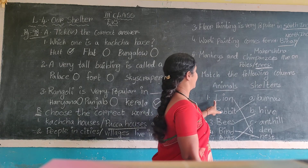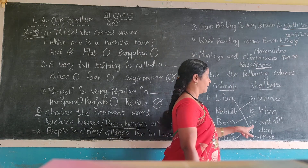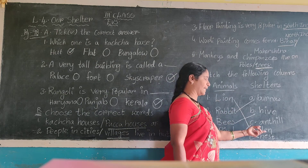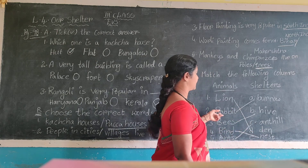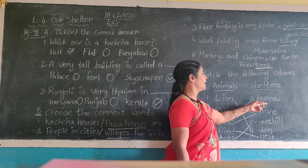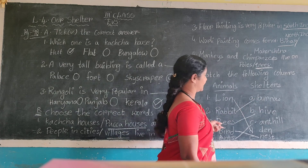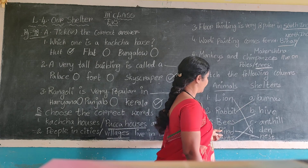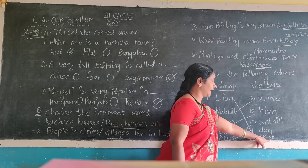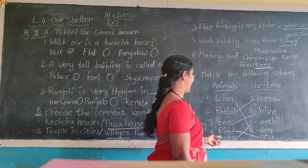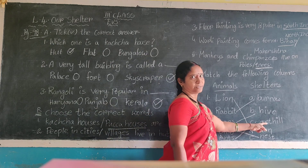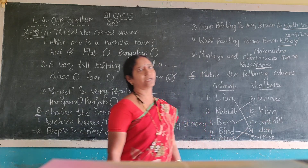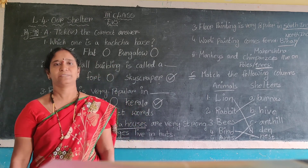Next, the matching answers: lion — den, rabbit — burrow, bees — hive, birds — nest, ants — nest. All of you are done. Very, very clean work. Thank you.